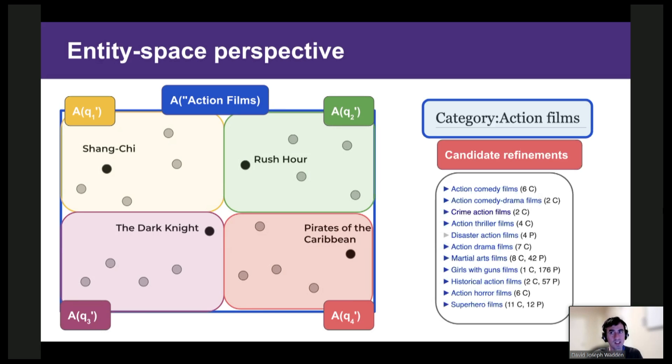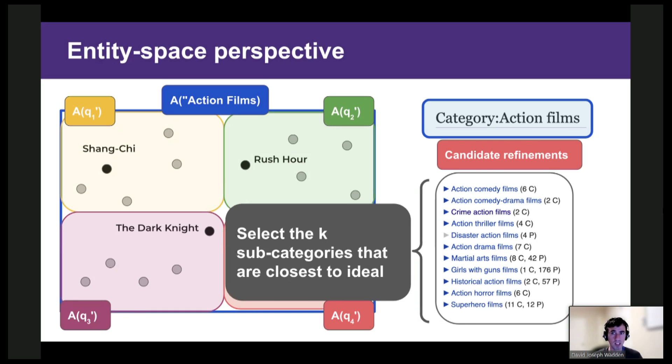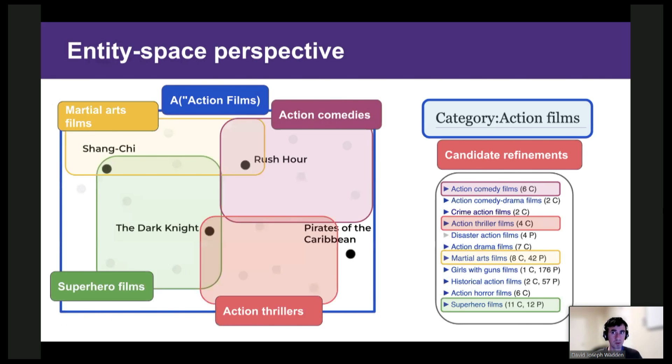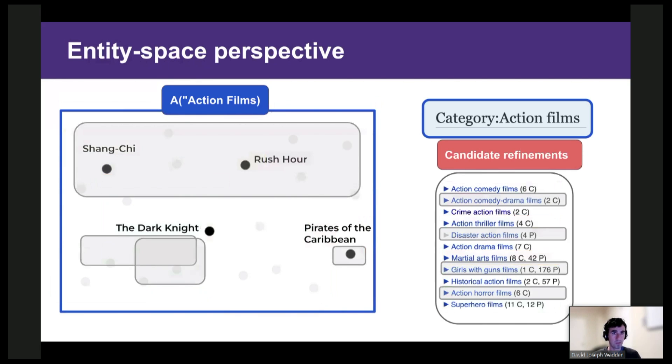Now, in practice, we can't divide the entity space up however we want. In fact, the colored boxes need to correspond to subcategories that are available in our KB. And so our goal will be to choose the k best subcategories that are closest to ideal. So here's an example of four subcategories that do a pretty good job of approximating an ideal partition. And by contrast, here are four subcategories that are not very good at all.